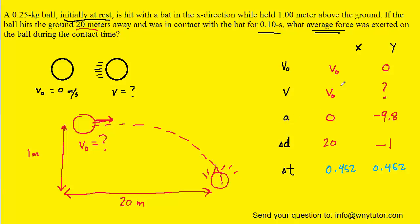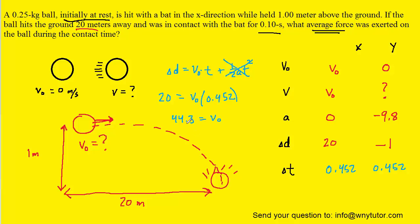We can now use the same kinematic equation in the x direction to find the initial velocity. Since the acceleration is 0, that term is eliminated. The displacement is 20 meters, and the time is 0.452 seconds. Dividing both sides by 0.452, we get about 44.3 meters per second for the initial velocity in the x direction. This was our objective — finding that initial velocity for the projectile motion part of the problem.